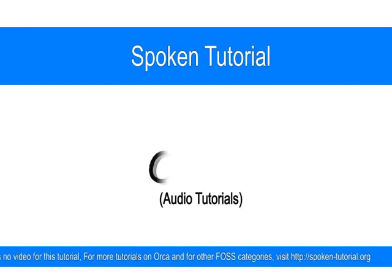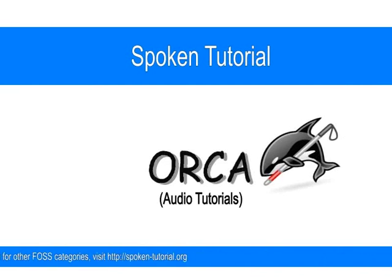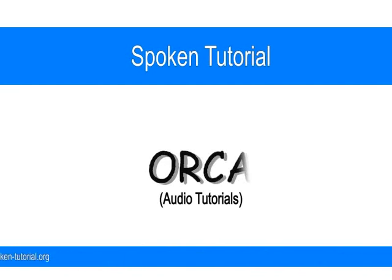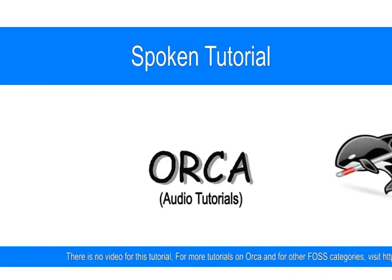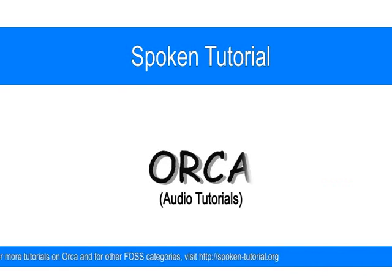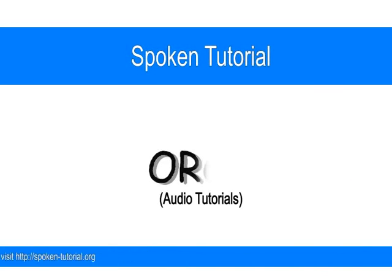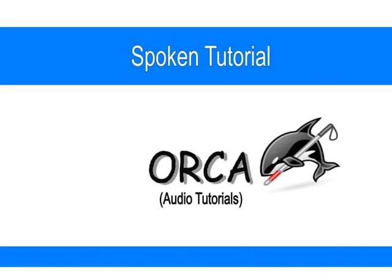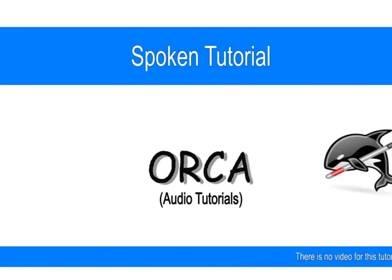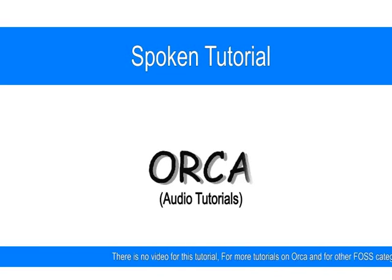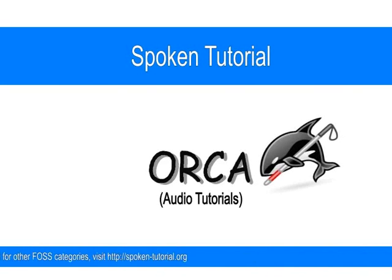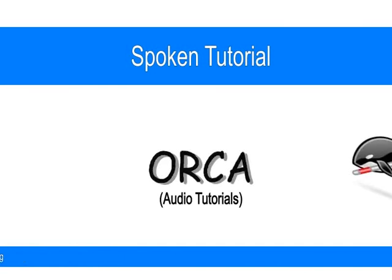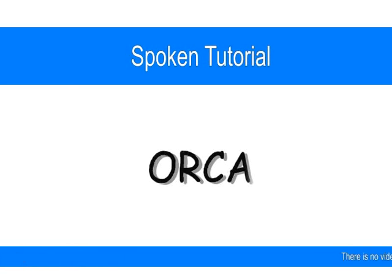So you can open any of these menus and see what's inside. Let's go up until we locate the Accessories menu — pressing up arrow: Internet menu, Games menu, Accessories menu. So let's open this sub-menu called Accessories by pressing the right arrow. The first option here is Calculator. Then CD/DVD Creator. There's a Character Map used for calligraphical activities. Disc Usage Analyzer. And there is a text editor called gedit. So we are going to open the gedit text editor now by pressing Enter.